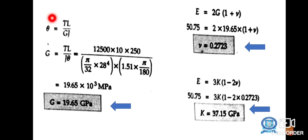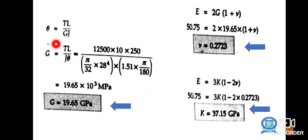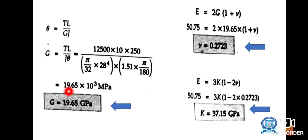Using the torsion formula: θ = TL / (GJ), where T is torque, L is length, G is shear modulus, and J is polar moment of inertia. Rearranging: G = TL / (J × θ). Substituting all values — T = 125,000 N·mm, L = 250 mm, J = (π/32) × 28⁴, θ = 1.51 × (π/180) — we get G = 19.65 GPa.